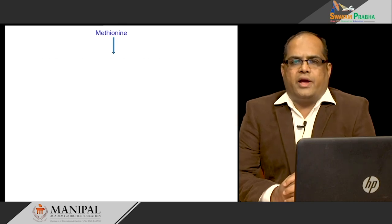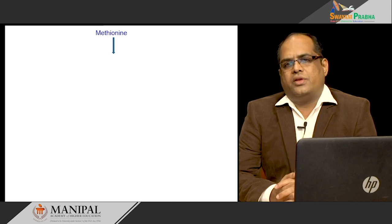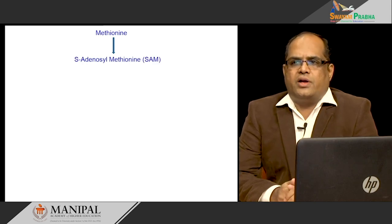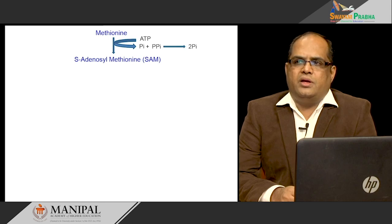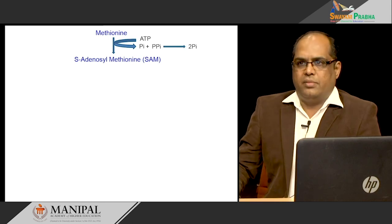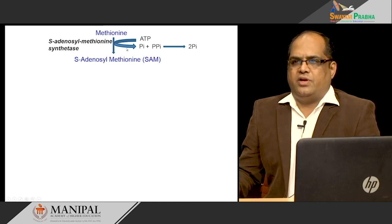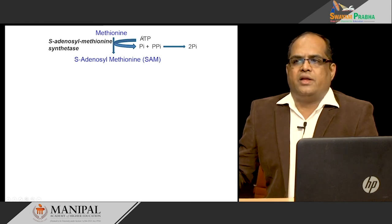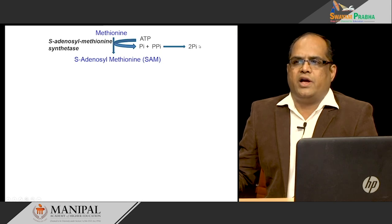Before looking directly into the disorders associated with this, we will just have a brief look on how methionine or sulfur-containing amino acids are metabolized. First, methionine is converted into S-adenosylmethionine (SAM), and for this you require ATP — ATP is the donor of the adenosyl group to methionine, and the enzyme required for this is S-adenosylmethionine synthetase. Three inorganic phosphates are hydrolyzed during this reaction.